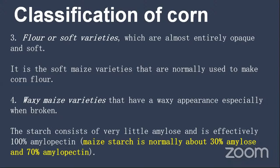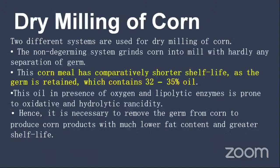Waxy maize contains 100 percent amylopectin. Normally, corn contains around 25 to 35 percent amylose, and the remainder is amylopectin. But waxy maize contains 100 percent amylopectin. So, these are the four types of corn: dent corn, flint corn, soft or flour corn, and waxy maize variety.